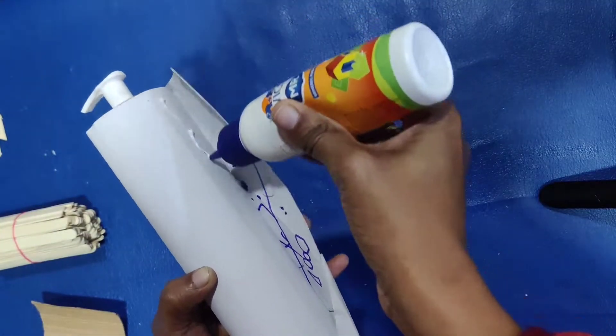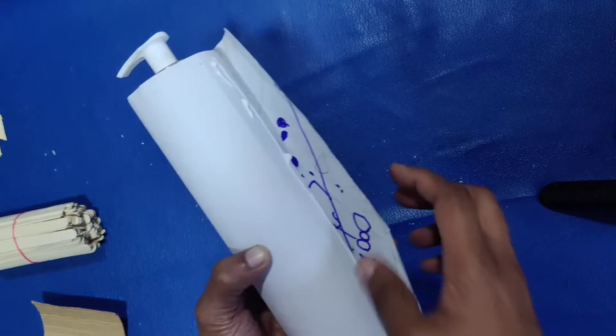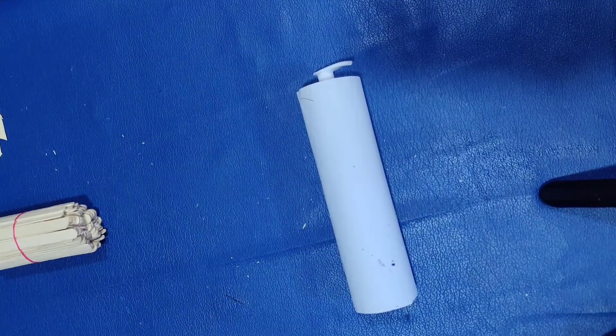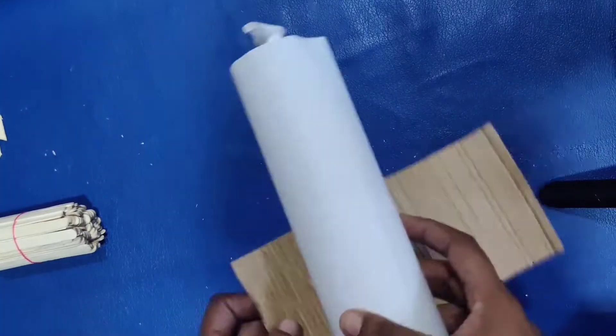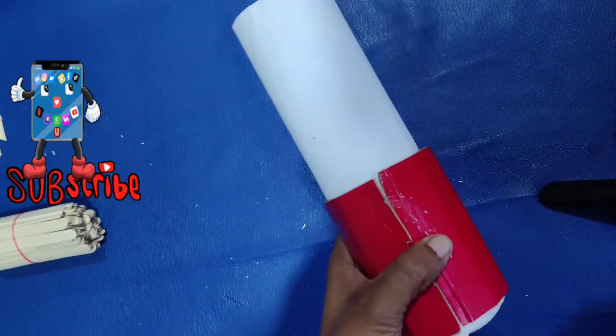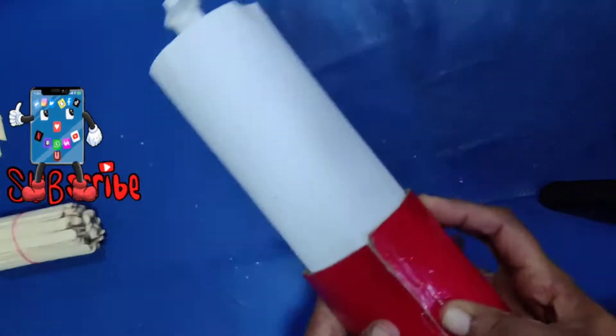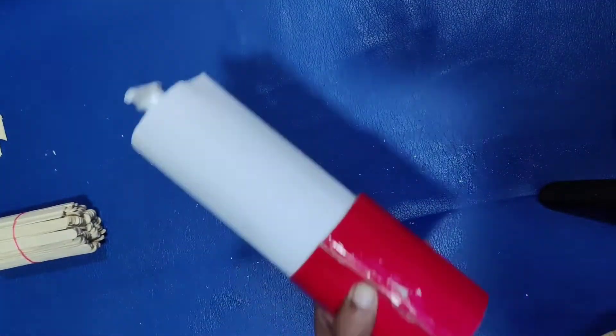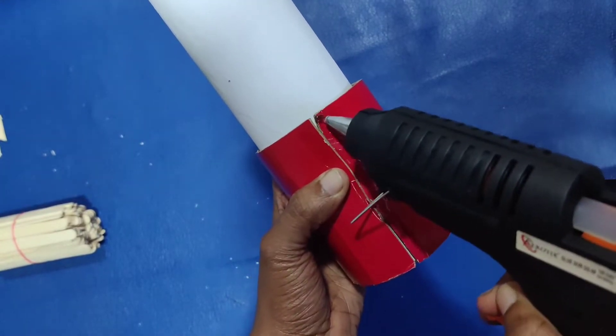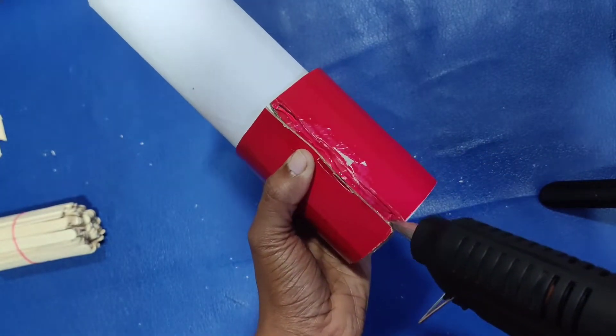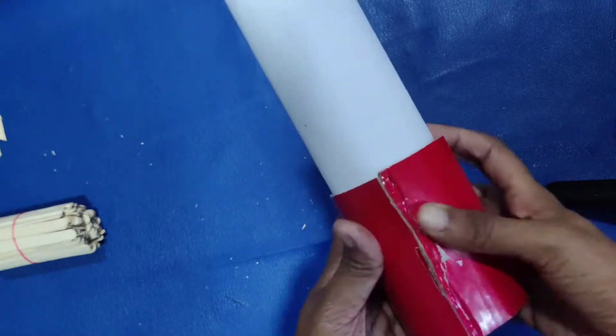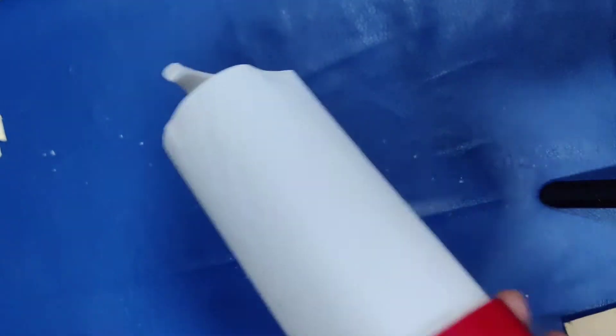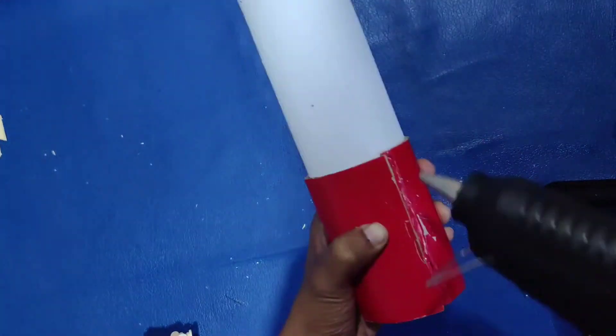Then we will glue the bottle. We will glue it with the cylindrical shape. We will glue the joint and glue it in the box.